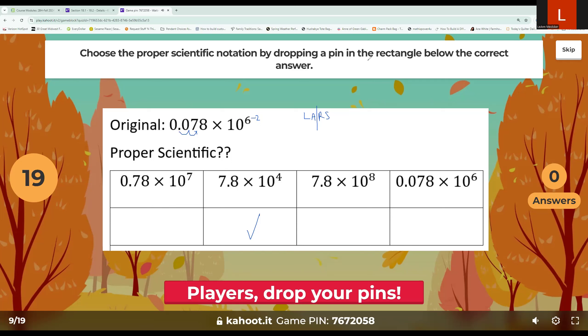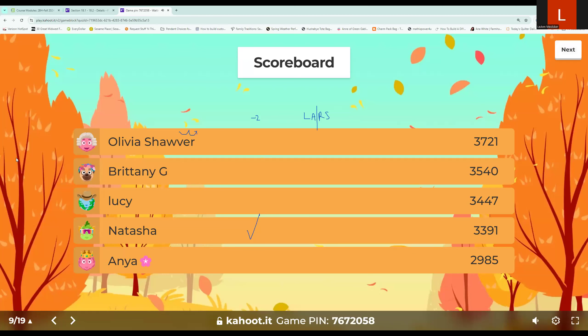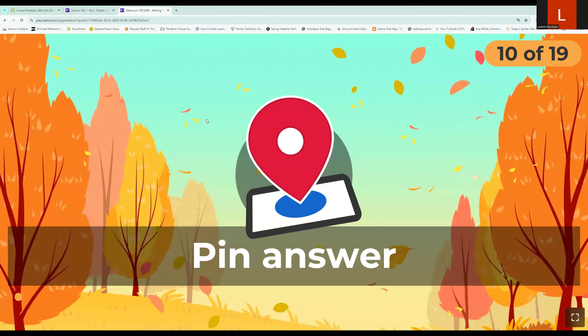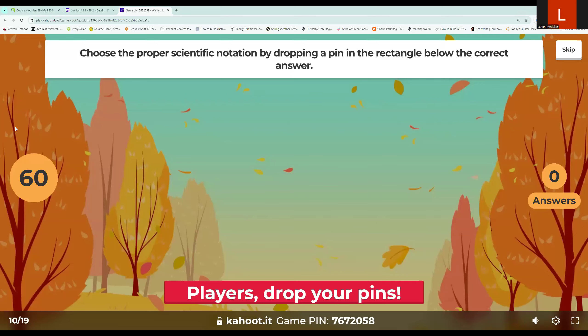It is this second choice right here. Okay, so let's move on to our next one. And again, it's just going to keep showing your score not changing because I'm doing it as myself instead of us doing it together in class. We have another pen problem, so let's choose the proper scientific notation. Let's look at what this one says.